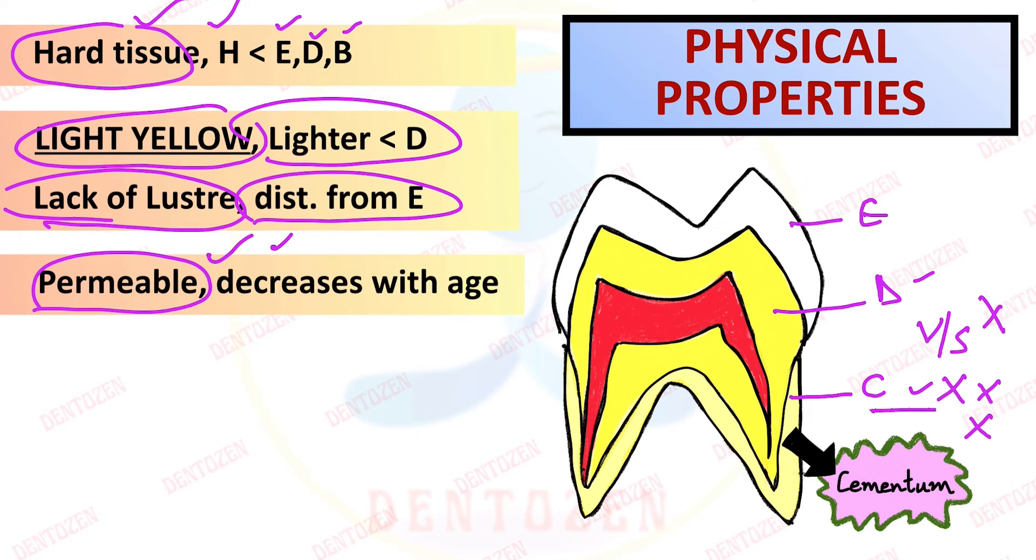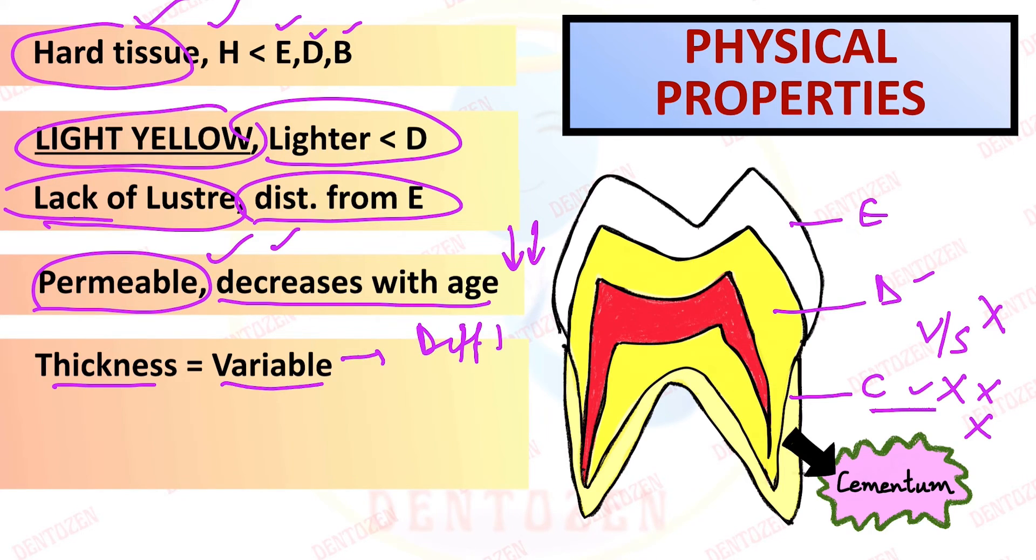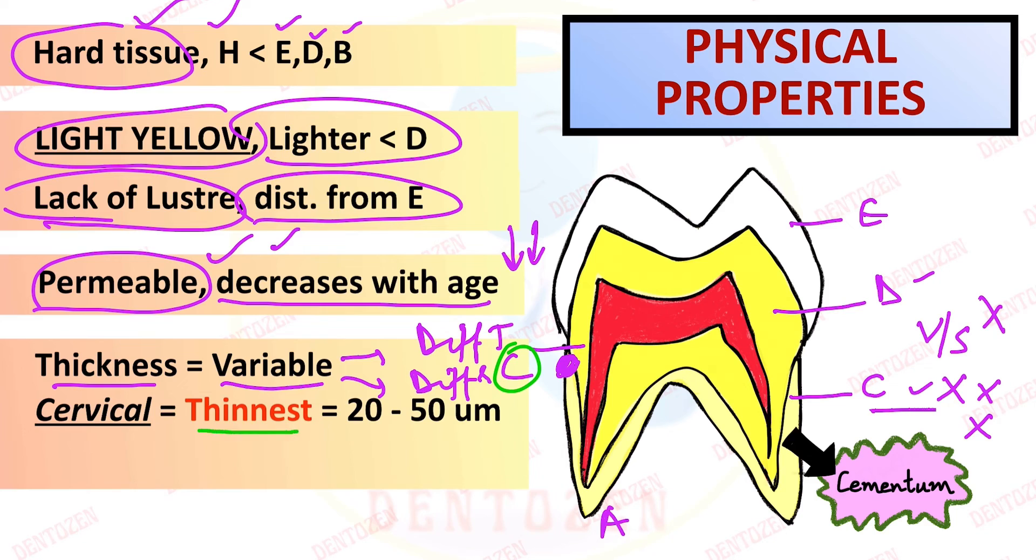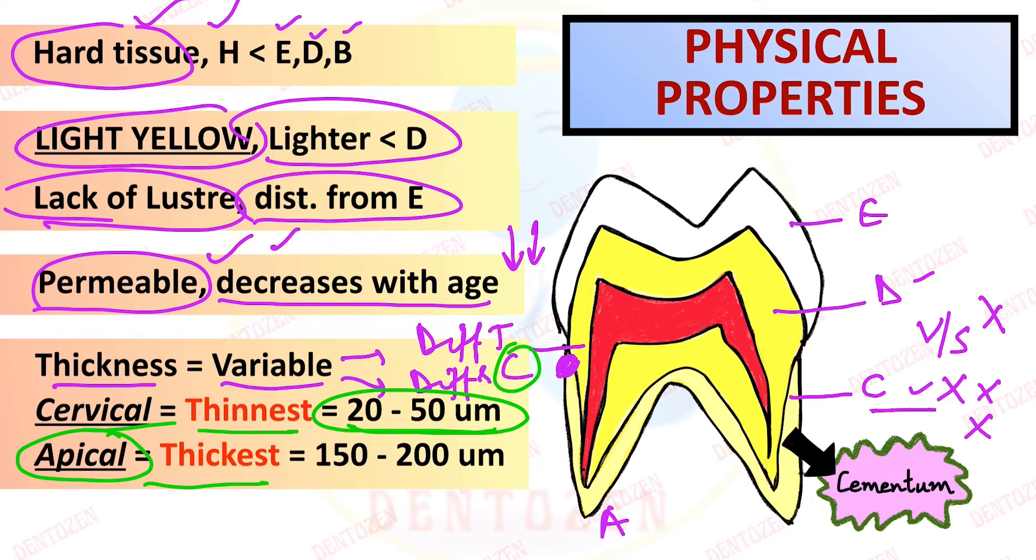It is permeable, it allows the minerals and ions to pass through it. But permeability decreases with age. Now if we talk about the thickness of cementum, it is variable. It is different for different teeth. Even in the same tooth, it is different in different regions. Now if you look at this diagram, where do you think cementum is thinnest? In the cervical or in the apical region? Yes, it is thinnest in the cervical region, which is about 20 to 50 micrometers. And it is thickest in the apical region, about 150 to 200 micrometers. Now that can be your important entrance and viva question. Where is it thinnest? Where is it thickest? And how much is the thickness?